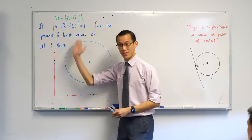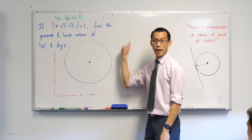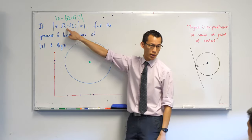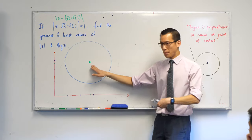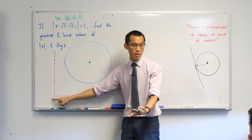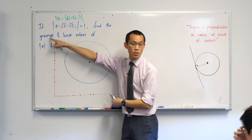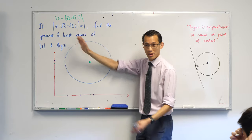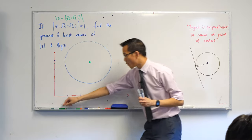We want to find the greatest and least values of mod z. What does that mean? Z can be anywhere on the circumference of this circle. It can float around, and anywhere on this circumference will satisfy this point because they're all one unit away from our reference point here. But obviously some of these zeds are further from the origin than others. So to look for the greatest and least value means I want the zed that's the furthest away from the origin and I want the zed that's the closest.